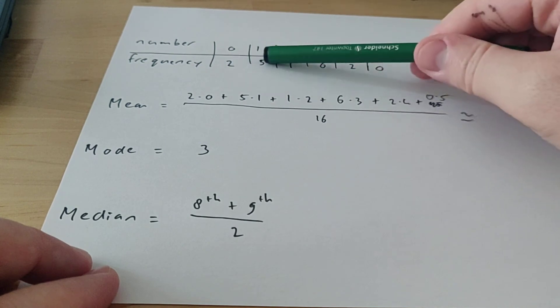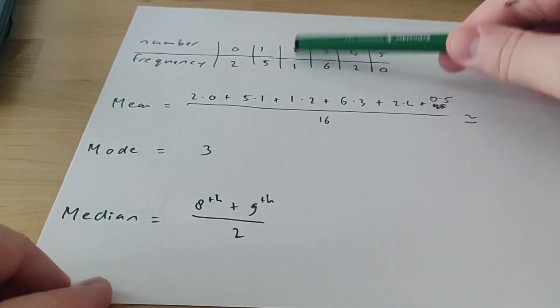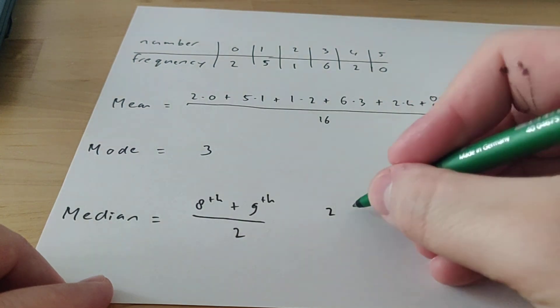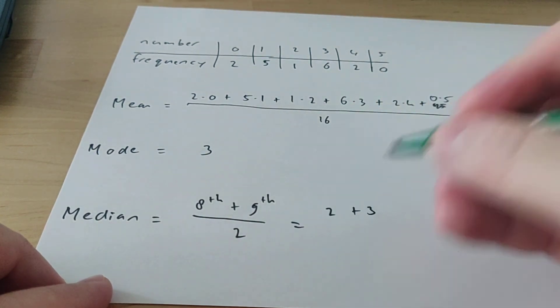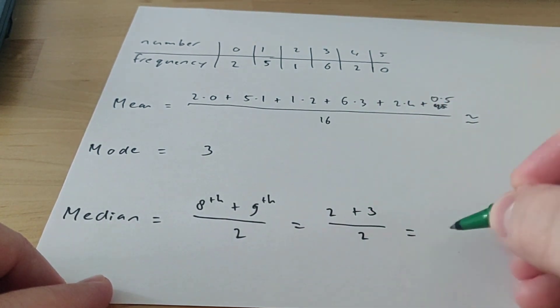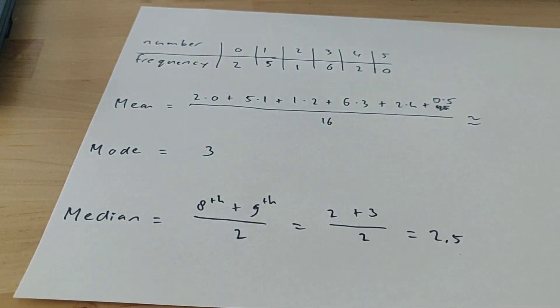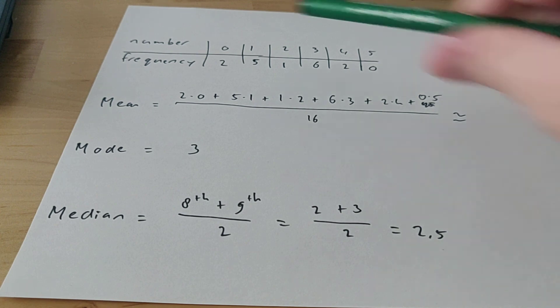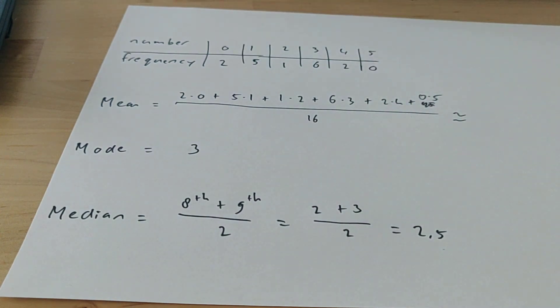So here we have 2 plus 5 is 7, plus 1 is 8. So the 8th number is a 2, and the 9th number is a 3. So if you do 2 plus 3 divided by 2, you have 2 and a half. So the median is 2 and a half, so that means that the median can actually be a number that's not in your table. But it can still be the median. So this is how that works. Hopefully this freshens up your memory a bit. I'll see you later.